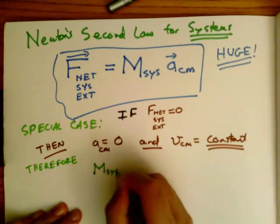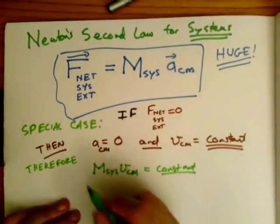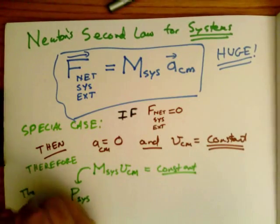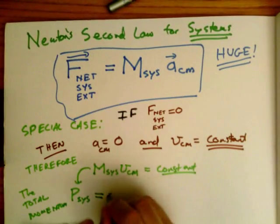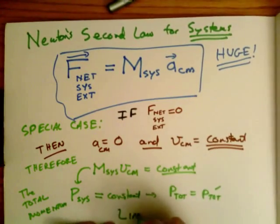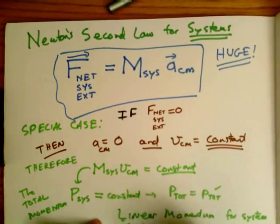Therefore if I multiply that times the mass of the system, that's also a constant. We can call this momentum of the entire system, the total momentum m_system v_cm, equal to a constant. p_tot equals p_tot prime. In other words, linear momentum for the system is conserved.